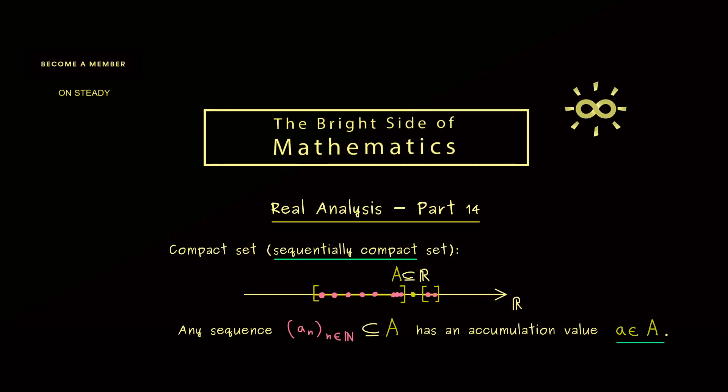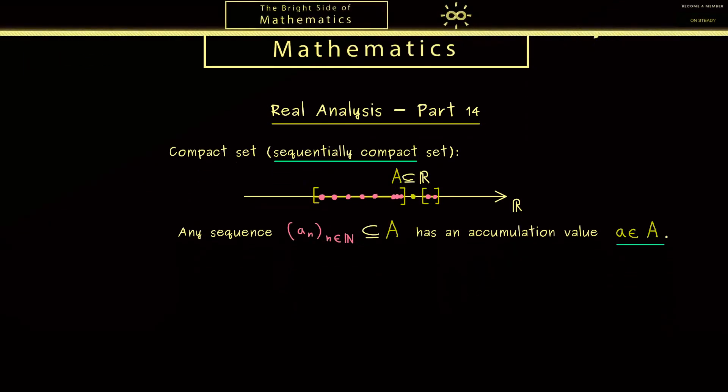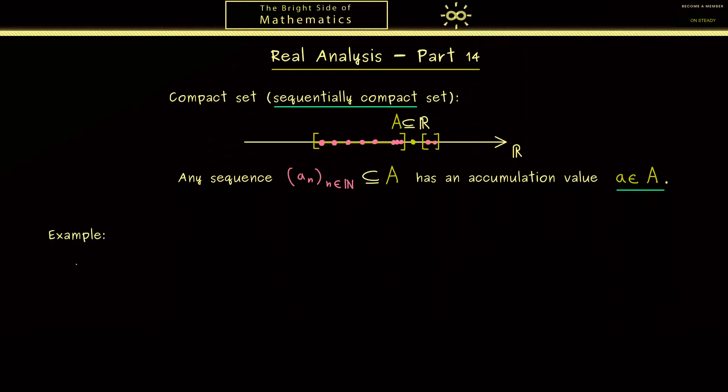Ok so we know the definition therefore we now can look at examples. And I would say we start with the simplest one. The empty set does not have any elements therefore this claim here is trivially true. Hence the set is compact. Similarly we can take another small set so a set with just one element. This one is also compact because there is only one possible sequence. In this case we have the constant sequence 5 with accumulation value 5.